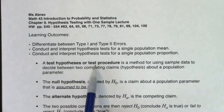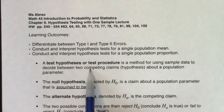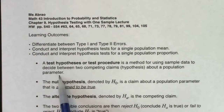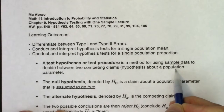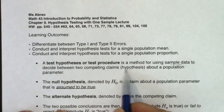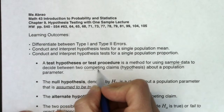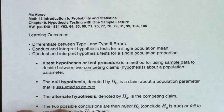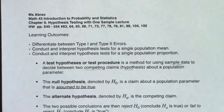Our test procedure is a method for using sample data to decide between two competing claims about a population proportion. We're going to use sample data to make guesses about our population — what do we think is true? There are going to be two competing claims that we'll call hypotheses: typically the null and the alternate. They have to be competing claims, and we're going to decide between which of these two we think is the truth.